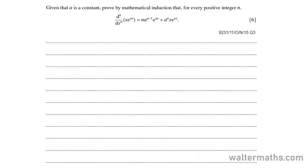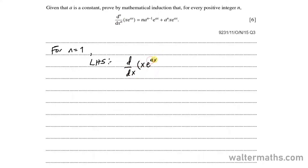Let's work on this question. The procedure remains the same. First, we are going to start by proving for n is equal to 1. When n is equal to 1, the left hand side will be d by dx of xe to the ax.